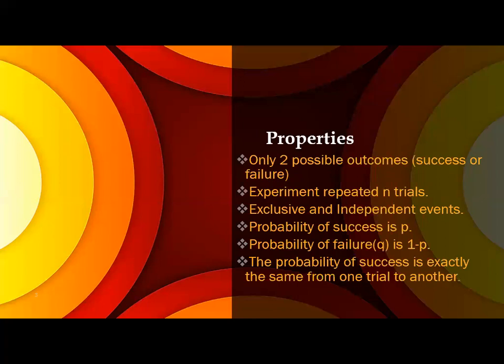You will consider the probability of success is P and probability of failure Q is 1 minus P. As we know, the probability of anything, the summation will be 1. That's why the probability of success is P means the negative will be 1 minus P.